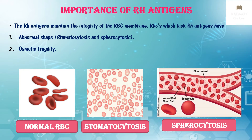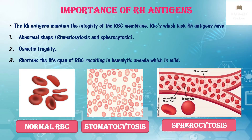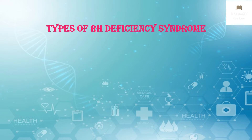Spherocytosis is a condition in which the RBCs appear like a sphere rather than the normal biconcave disc shape. Lack of RH antigens may result in osmotic fragility, which is the tendency of RBCs to break down easily. Lack of RH antigens may also shorten the lifespan of RBCs, resulting in mild hemolytic anemia.